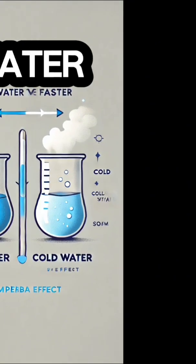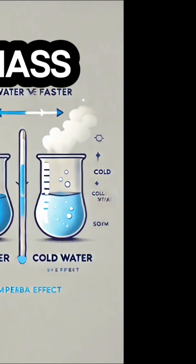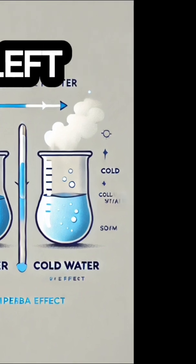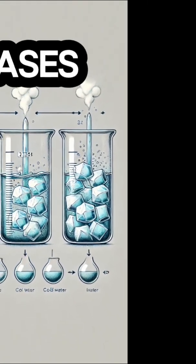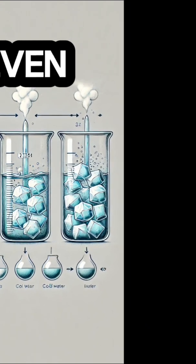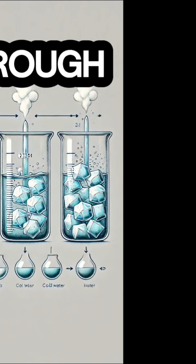One idea is that as hot water evaporates, it loses mass, meaning there's less water left to freeze. Another theory suggests that warm water has different levels of dissolved gases, which could affect how ice forms. Some even think it has to do with how heat moves through water.